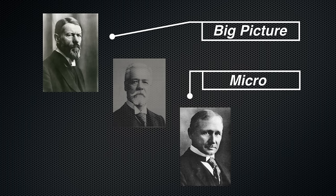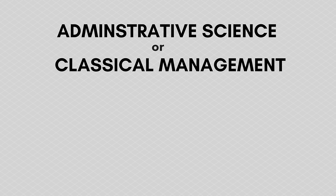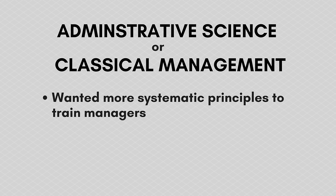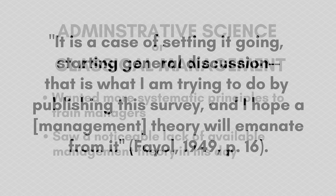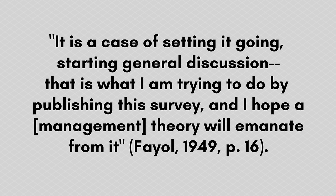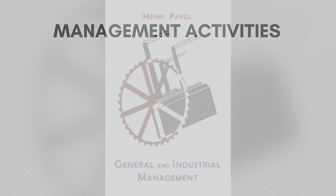Henri Fayol took a mid-level approach, looking at the management side of things — how should we manage people? He put forward a theory called administrative science, or sometimes just classical management. He believed that managers needed to be trained in a much more systematic approach, and he didn't see good theories out there for how to train managers. He wrote that he was trying to start a general discussion, hoping a management theory would emanate from it. He wrote a book that became popular in the late 1940s, and in it he talked about management activities that managers should be competent at — a list you'll see in many textbooks. He thought we needed good planning, with managers looking ahead and charting a course for the organization, and that organization itself was a key management activity — selecting and arranging people in an orderly and efficient fashion.